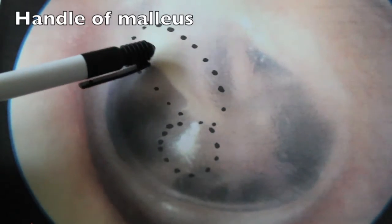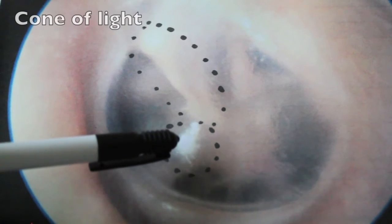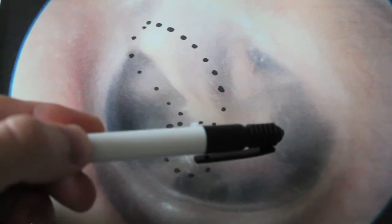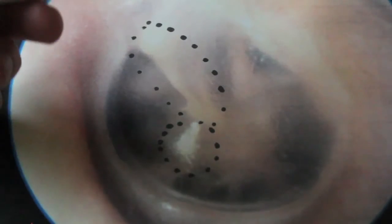Here you can see the handle of malleus, the light reflex, the pars tensor and the pars flaccida.